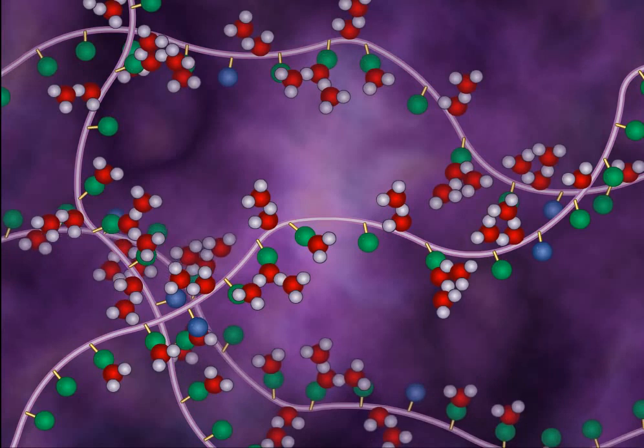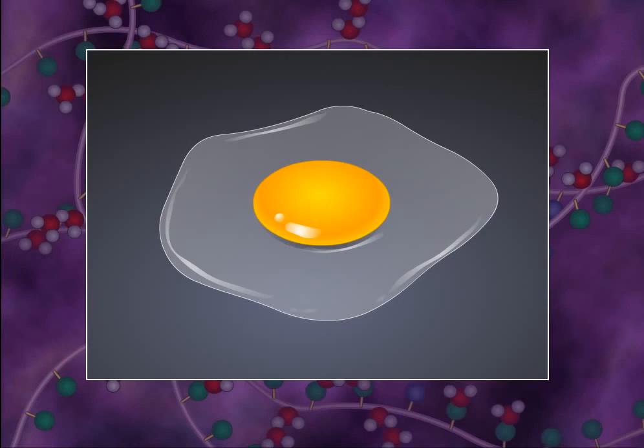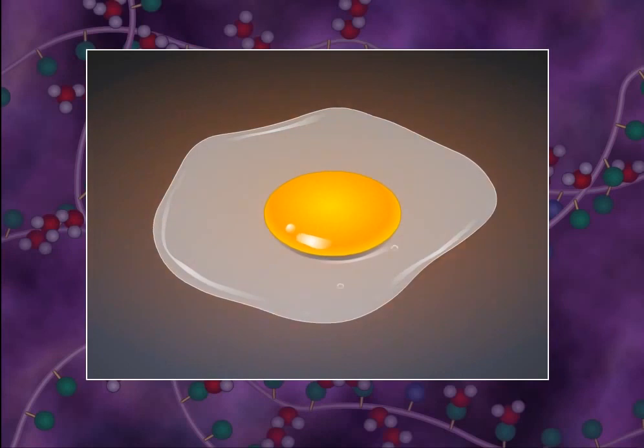One example of the consequences of unfolding and reassociating protein molecules is coagulation of egg white. Frying an egg is no more complicated than denaturing the egg white protein.